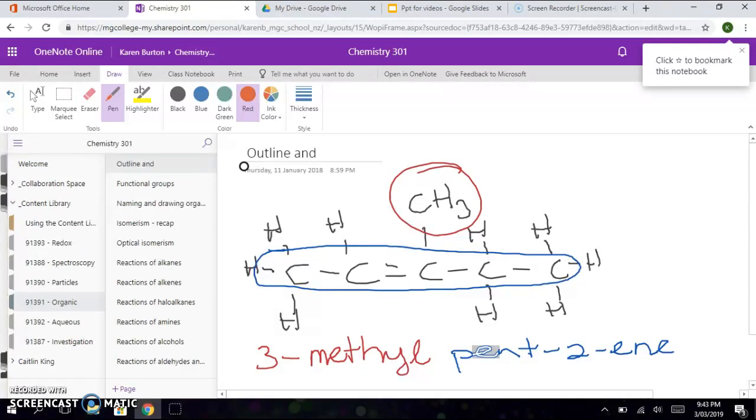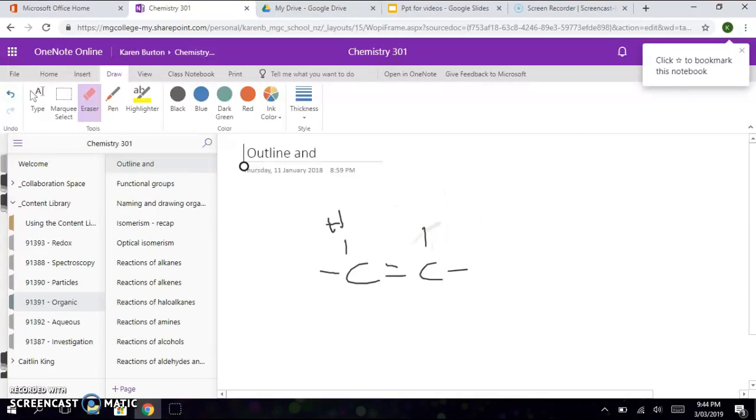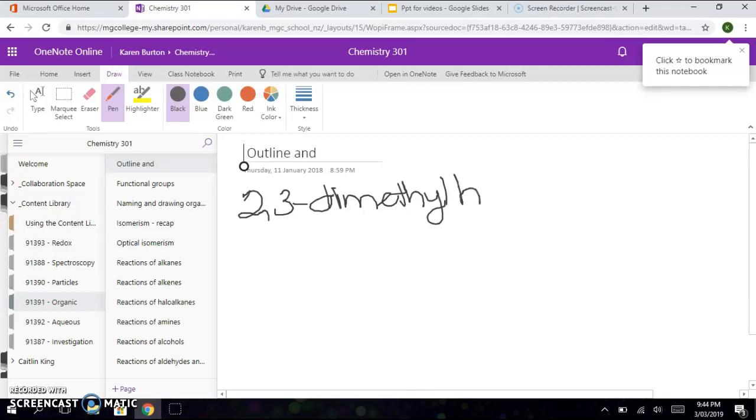Okay, if we have to name a molecule, if we have to draw a molecule from a name, I actually think that's almost easier because let me show you why I think it's almost easier. If we come up with a nice long and complicated name, we'll see how we go about drawing that. Okay, so we're going to have 2,3-dimethylhept-1-ene.